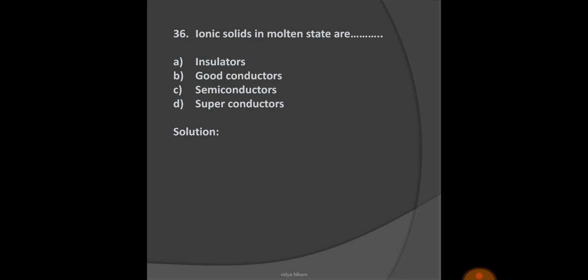Next question: Ionic solids in molten state are? Options: A) Insulator, B) Good conductor, C) Semiconductor, D) Superconductor. Ionic solids produce ions in molten state, so they act as good conductors. Option B is the right option.